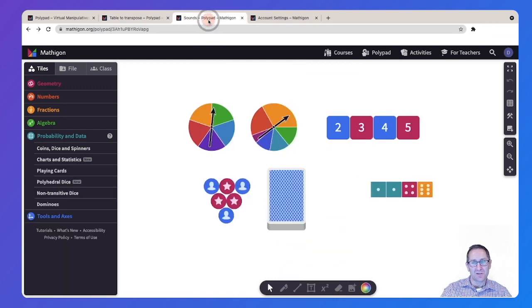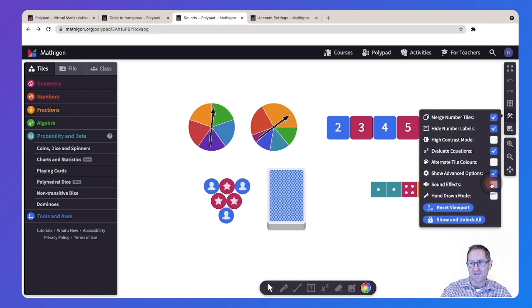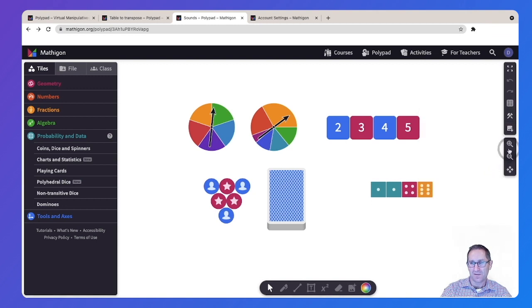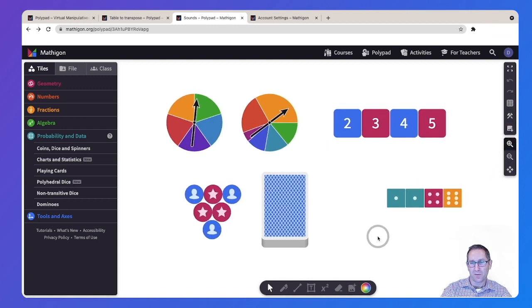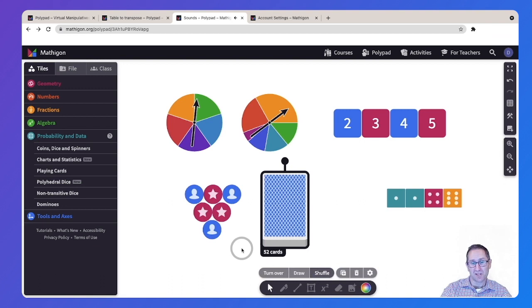The final thing to show you are sound effects. You can turn them on and off under settings. There is a sound effects box that you can turn on and off. And here are a few of the tile types that have sound effects. Here's a deck of cards. When you click shuffle, you'll now hear a shuffle sound effect. That is especially helpful because there's no action that you see when the deck of cards is shuffled.